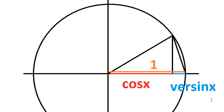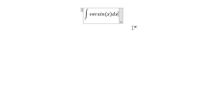So to find the versin x in here, we have number 1 minus cosine x. And so we can convert this one into like this.